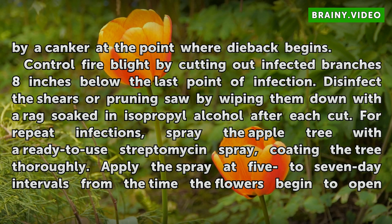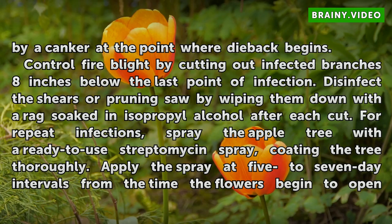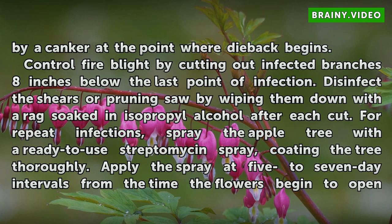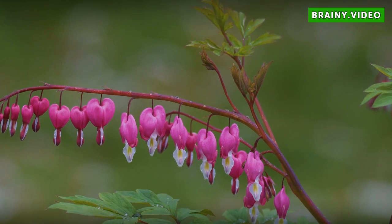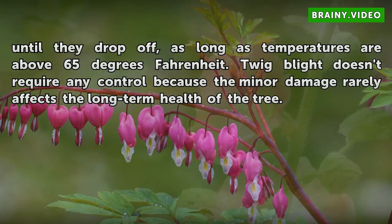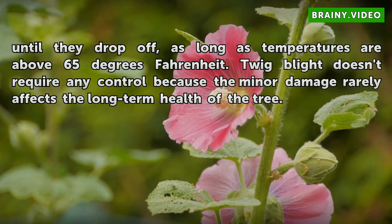Control fire blight by cutting out infected branches 8 inches below the last point of infection. Disinfect the shears or pruning saw by wiping them down with a rag soaked in isopropyl alcohol after each cut. For repeat infections, spray the apple tree with a ready-to-use streptomycin spray, coating the tree thoroughly. Apply the spray at 5 to 7 day intervals from the time the flowers begin to open until they drop off, as long as temperatures are above 65 degrees Fahrenheit. Twig blight doesn't require any control because the minor damage rarely affects the long-term health of the tree.